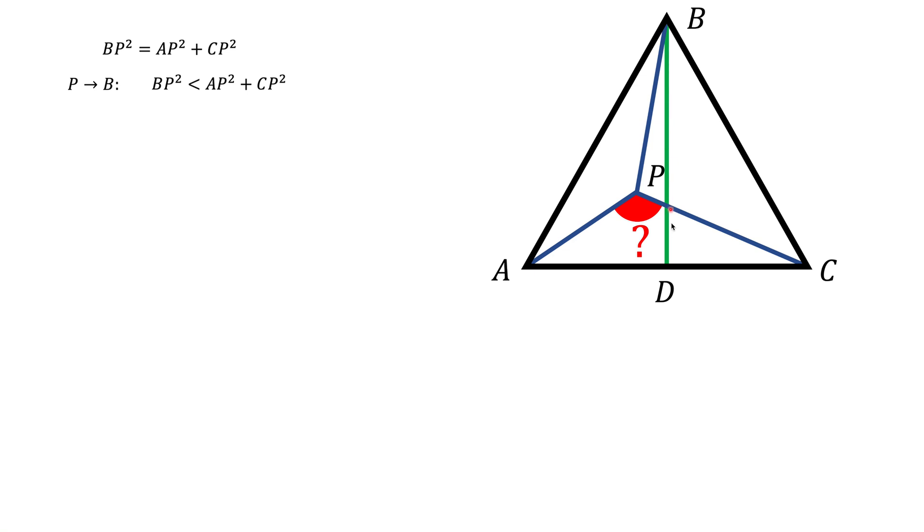Notice when P actually moves to point D, in this case it's rather easy to show that BP squared is going to be greater than AP squared plus CP squared. I'm gonna leave it as an exercise to you because it's not really important for solving this problem.